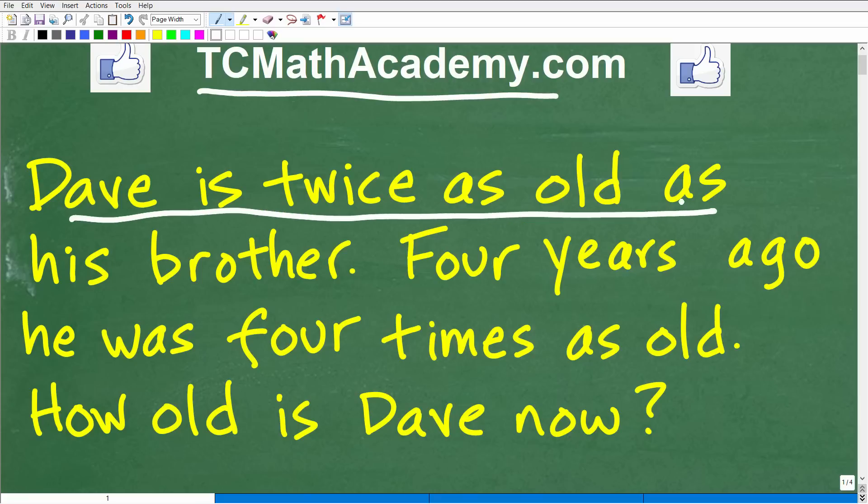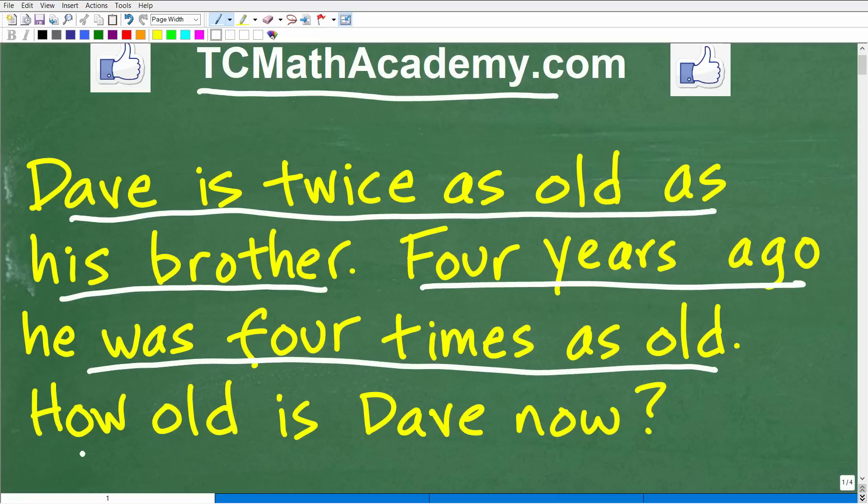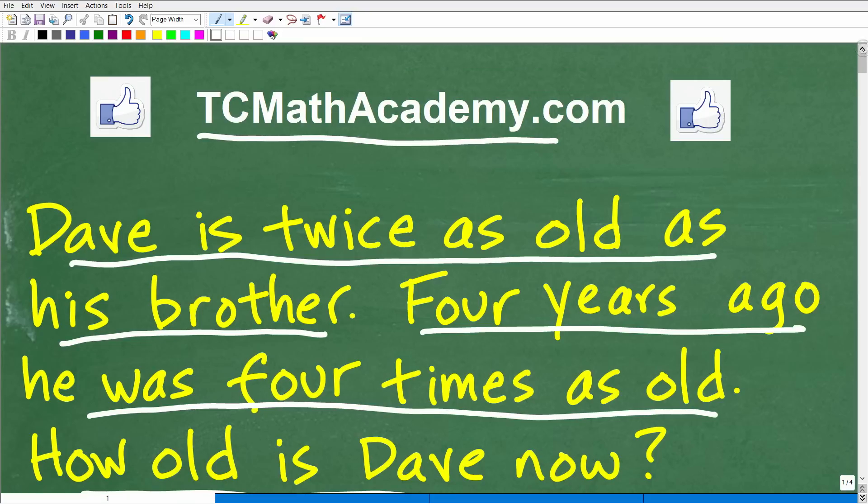The problem says: Dave is twice as old as his brother. Four years ago he was four times as old. How old is Dave now? If you can figure this out, put your answer in the comment section. I'm going to show you the correct answer in just one second, then solve this step by step. Also, if you need math help with the course you're taking, test prep, or homeschooling, make sure to check out my math help program at TCMathAcademy.com. You can find a link in the description below. If this video helps you out, don't forget to like and subscribe.